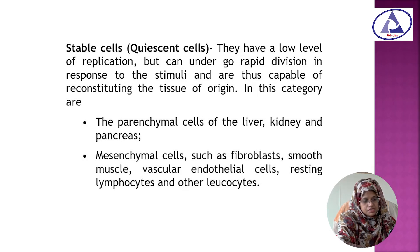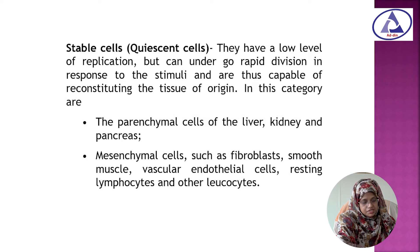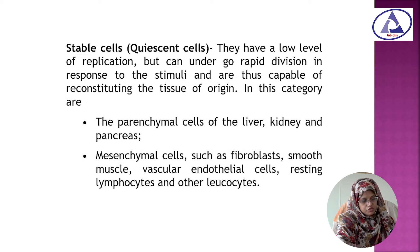Now, the stable cells. They have a low level of replication but can undergo rapid division in response to stimuli, and are thus capable of reconstituting the tissue of origin. In this category are the parenchymal cells of the liver, kidney, and pancreas, and the mesenchymal cells such as fibroblasts, smooth muscle, vascular endothelial cells, resting lymphocytes, and other leukocytes.